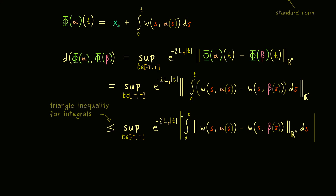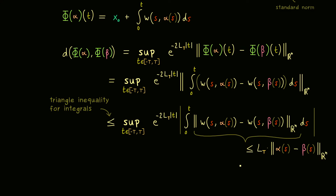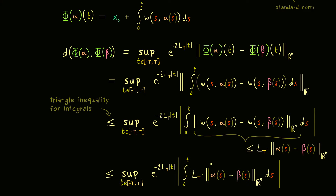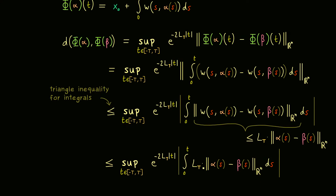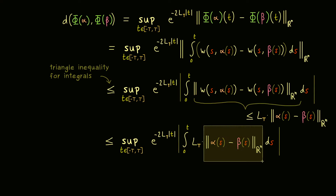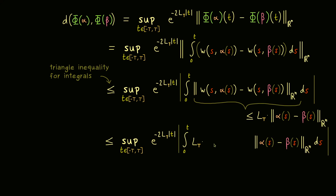Inside the integral we have the difference of the w's, so we can use our global Lipschitz condition — it holds for all points in R^n, so definitely also for α(s) and β(s). Now we just need to introduce the original metric between α and β by introducing the exponential factor in front of the standard norm. We push everything to the right and multiply with the numbers: in the exponent we need lowercase s, and if we multiply by the same thing with a positive sign, we haven't changed anything. This whole thing is less than or equal to the supremum — in other words, less than or equal to the distance between α and β.